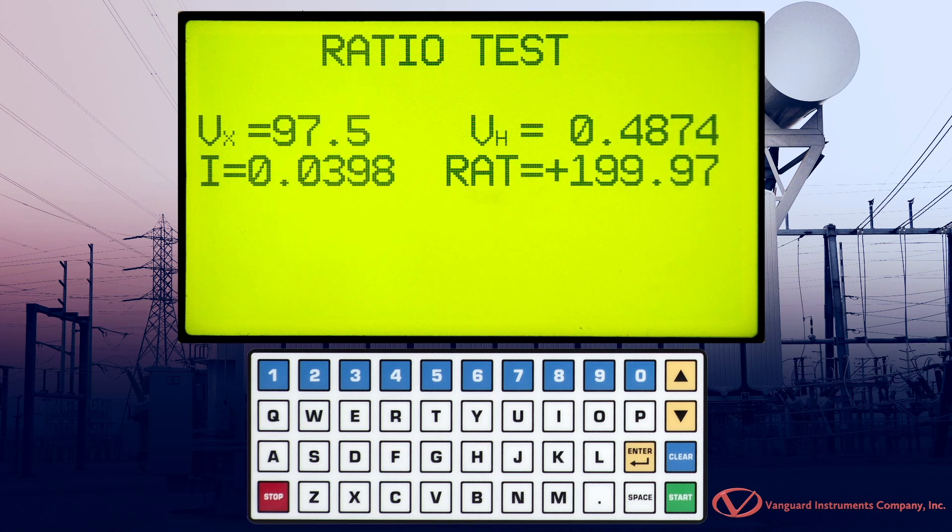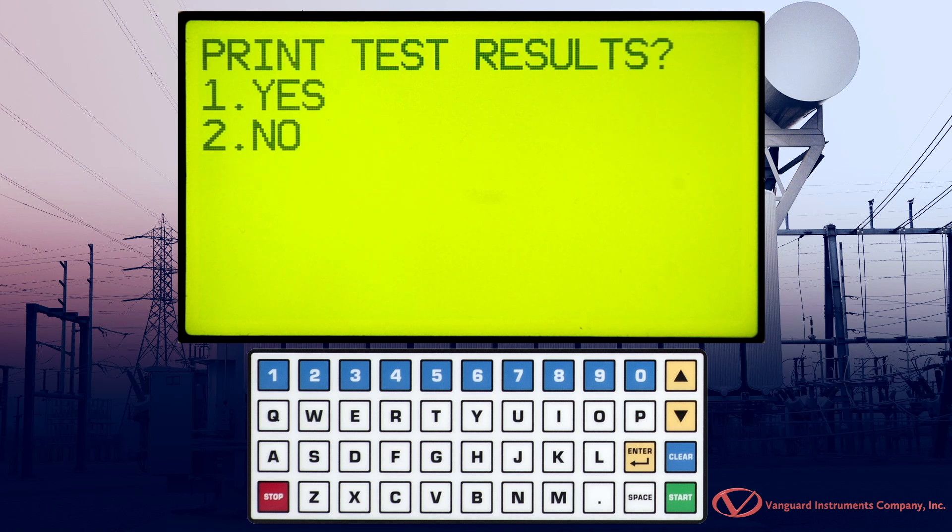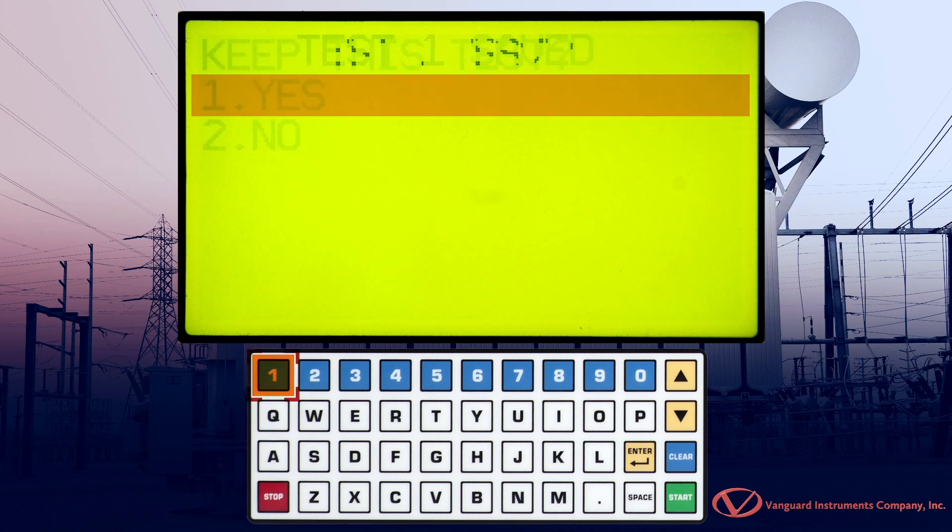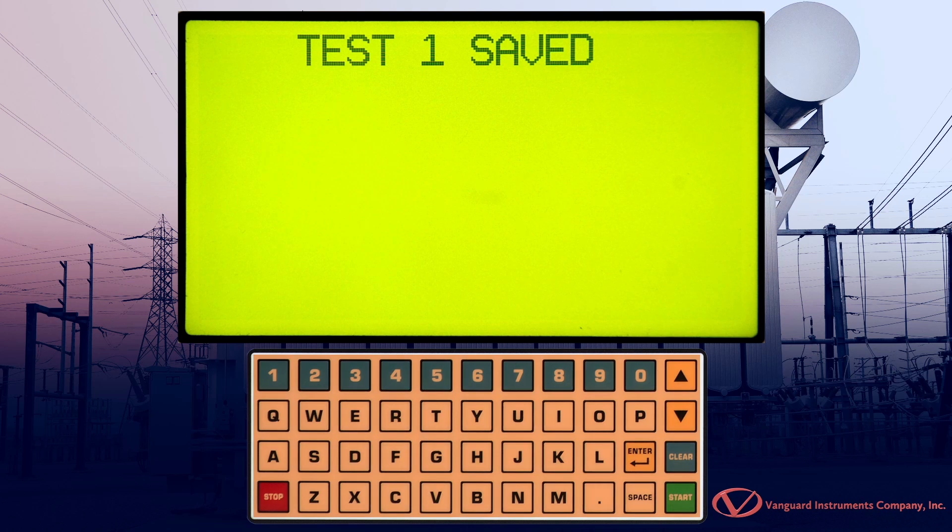Once the results have stabilized, we're given the option to print the test results. Press 1 for yes. Now press 1 to keep the test results. Press any key to continue.